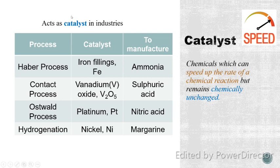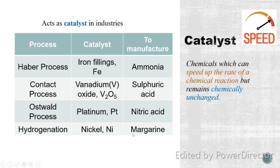Transition elements can act as catalysts in industries. A catalyst is a chemical which can speed up or increase the rate of a chemical reaction but remains chemically unchanged. For example, iron is added as a catalyst during the Haber process to produce ammonia; vanadium(V) oxide is added during the Contact process to produce sulfuric acid; platinum is added in the Oswald process to produce nitric acid; and nickel is added during hydrogenation to produce margarine. Chemically unchanged means that, for example, in the Haber process, iron is added and at the end of the process, iron still remains as iron — it won't form iron(II) chloride or iron(III) nitrate.